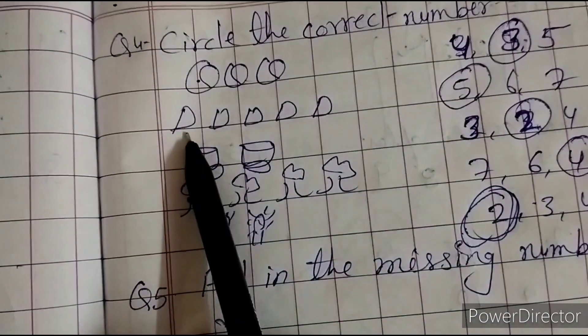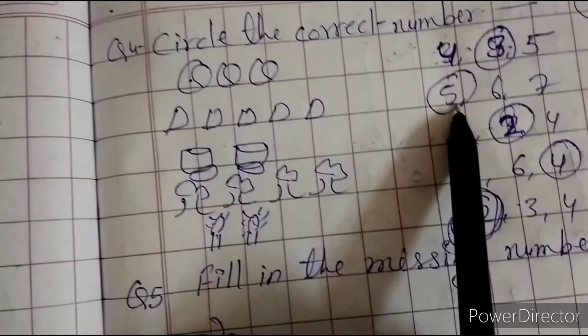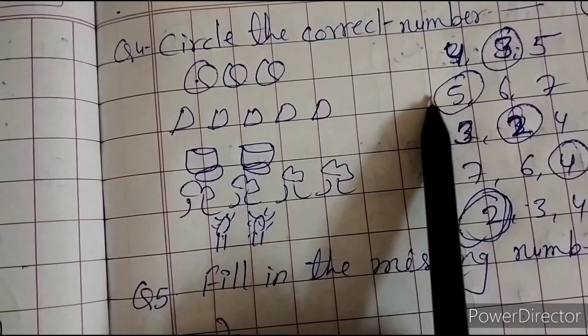And we count the triangle. One, two, three, four, five. Five. So five for circle.